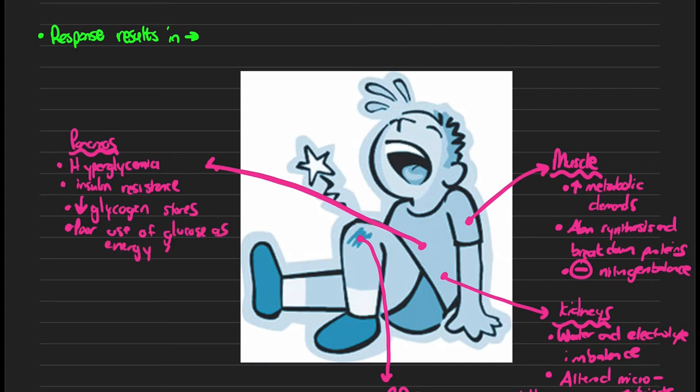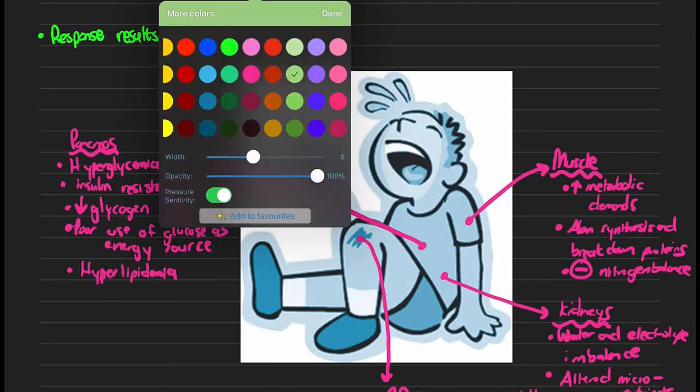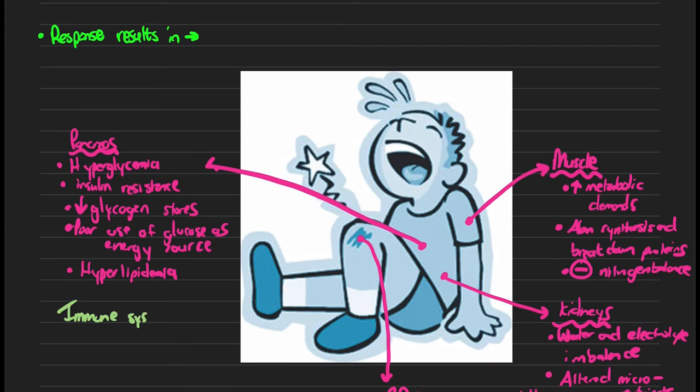Finally, let's look at the response in the immune system, where we see a release of our cytokines, our pro-inflammatory proteins, and our hormones.